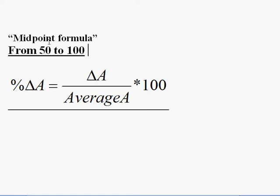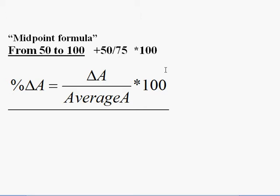Using the same numbers — going from 50 to 100 — the change is positive 50. The average of 50 and 100 is (50 + 100) / 2 = 75. So we get 50 / 75 × 100 = 66.67 percent change.